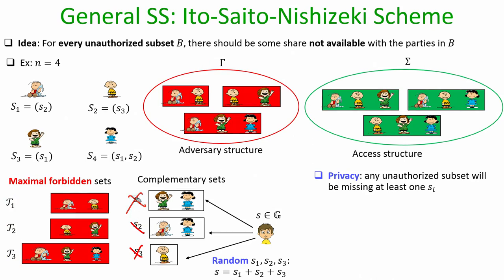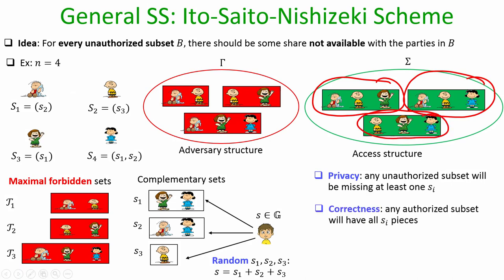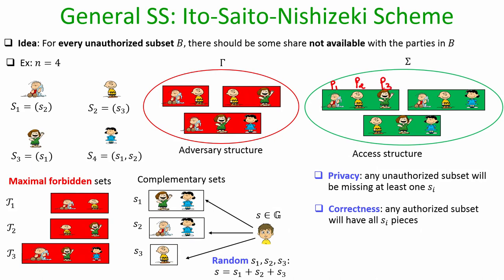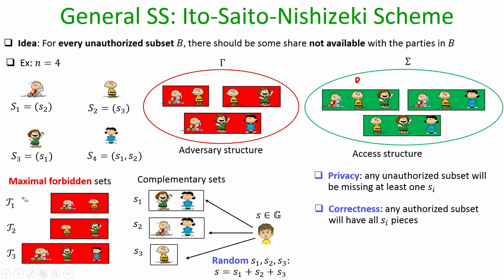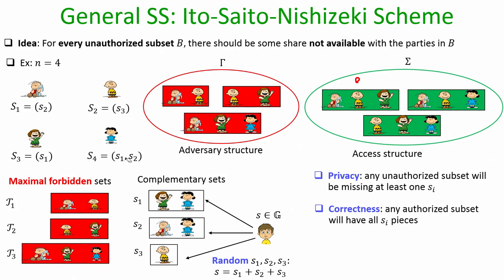Now the correctness property: can any authorized (green) subset of parties reconstruct the secret? When P1, P2, P3 come together they collectively have S1, S2, S3 and can sum them to get back S. When P1, P2, P4 come together, they collectively also have S1, S2, S3 and can reconstruct. When P2, P3, P4 come together, they again collectively have S1, S2, S3 and can reconstruct the secret.